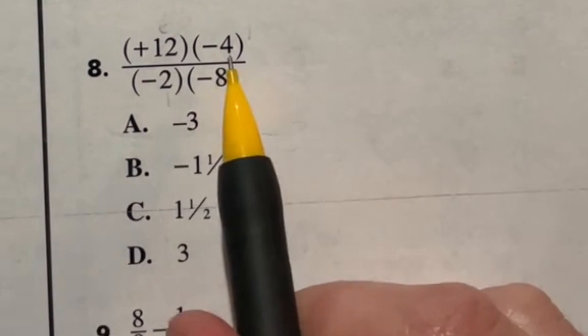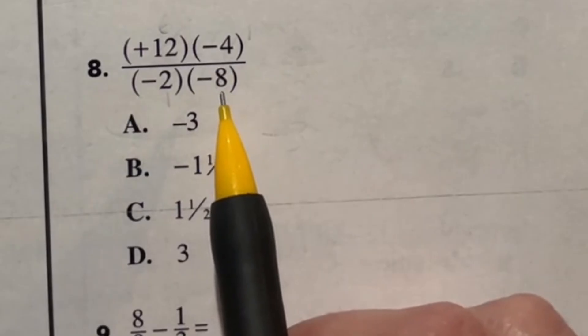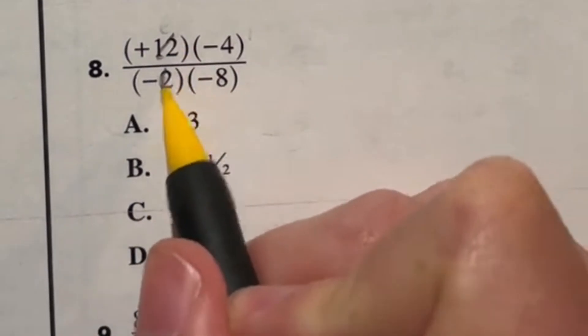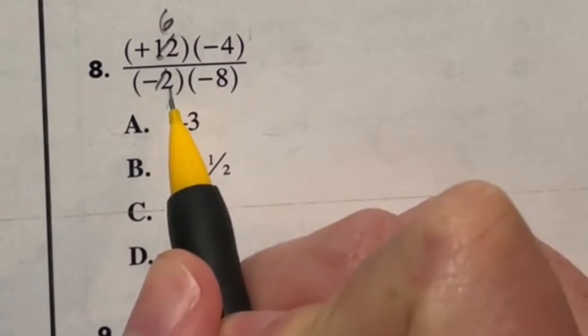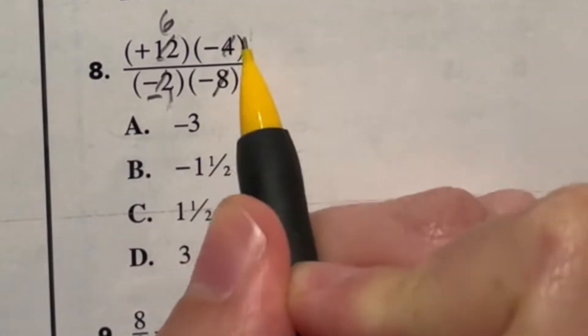Looking at the second one here, we have a positive 12 times negative four divided by negative two times negative eight. Now here's the deal, we're essentially reducing here first. So 12 and two, well, 12 divided by two is just six, and that leaves us at the one, but we still have that negative out front. We got four and eight. Well, four goes into eight two times, so that reduces right there.